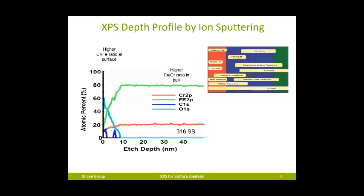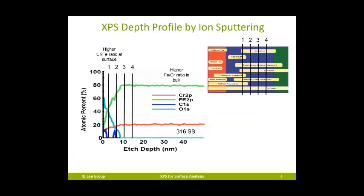XPS can also probe the layers below the thin surface skin via a process called ion sputtering. XPS uses energetic argon ions to remove a few atomic layers at a time while continually sampling the surface spectra. In this way, the composition as a function of depth can be probed. Sputtering shows that the iron continually increases and consequently the percentage of chromium decreases in the layers below the passivated surface skin.